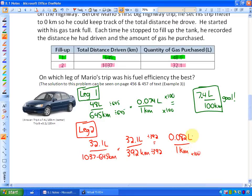And if I want to know how many liters per 100 kilometers I could just times that by 100. So it would be 8.2 liters per 100 kilometers.